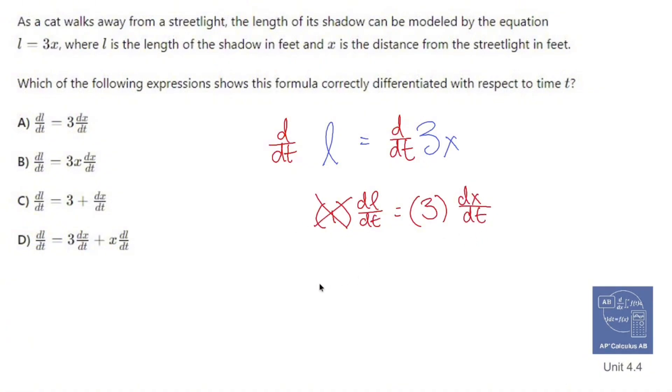So that one doesn't need to be there. And you have dL/dt is going to equal 3 dx/dt, which is going to be A.